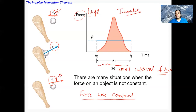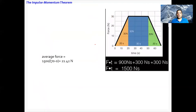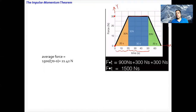In the next slide I'll talk about the force versus time graph. The y-axis is force and the x-axis is time. From 0 to 20 seconds, the force increases from 0 to 30 newtons. From 20 to 50 seconds the force remains constant at 30 newtons. From 50 to 70 seconds the force decreases from 30 back to 0. Everything happens within 70 seconds.